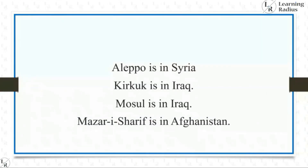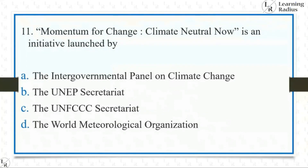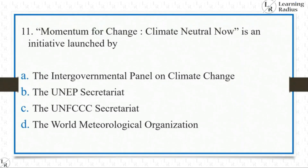Momentum for Change: Climate Neutral Now is an initiative launched by which of the following? Options are: Intergovernmental Panel on Climate Change, UNEP Secretariat, UNFCCC Secretariat, or the World Meteorological Organization. It's a very direct and simple question. Momentum for Change: Climate Neutral Now is an initiative launched by the UNFCCC.